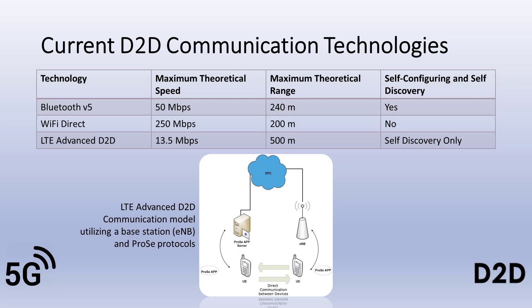Wireless device-to-device direct communication has been around for more than 100 years in various forms. It can be defined as direct communication between two devices or users where the data does not traverse a base station or use the core network. This definition does not specify that the signal is analog or digital. The analog versions of this technology are still in use today; walkie-talkies and CB radios are the most common examples. This presentation will concentrate on digital D-to-D communications in the 5G cellular frequency spectrum.